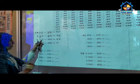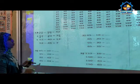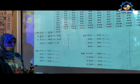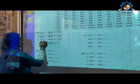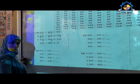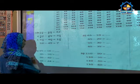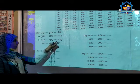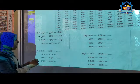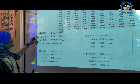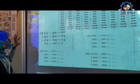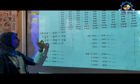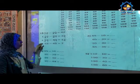And the third problem: 52 minus 40. Start from the ones: 2 minus 0 equals 2. And 5 minus 4: count from 4 to reach 5 — that is 1. The answer is 12. In the first three problems we subtracted multiples of 10 only — minus 10, minus 20, minus 40.